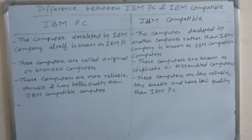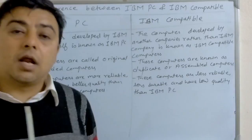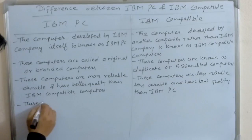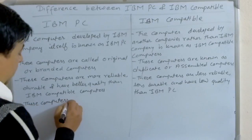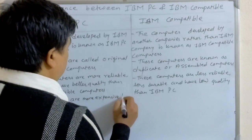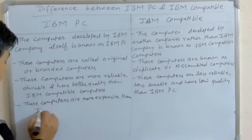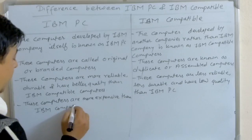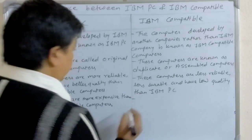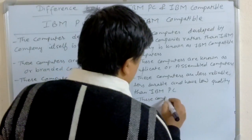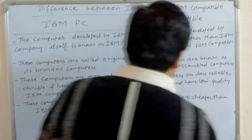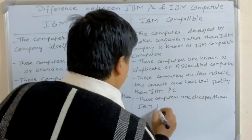IBM computers are more expensive than IBM compatible computers. IBM compatible computers are cheaper than IBM PC.